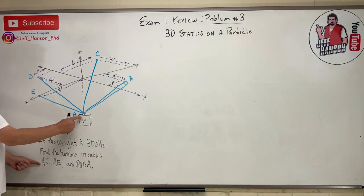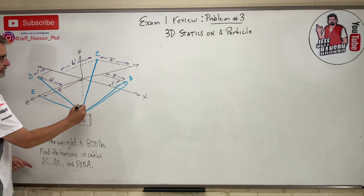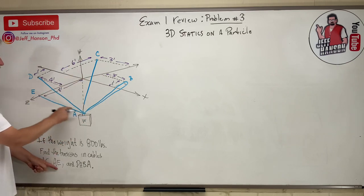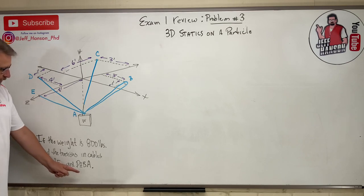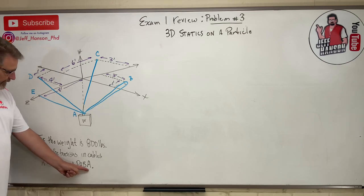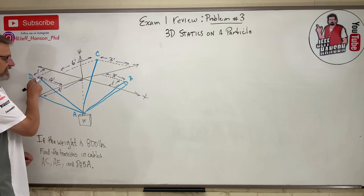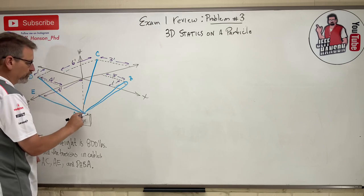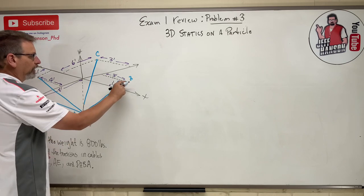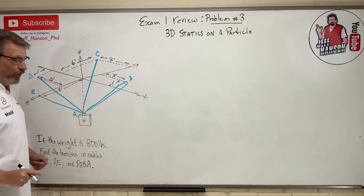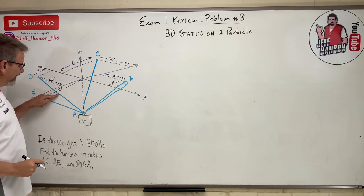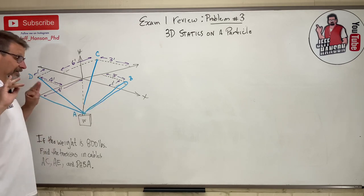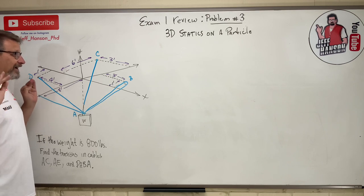So that's cable AE — one cable — and cable DABA, like yabba-dabba-doo, D-A-B-A. It's one cable that comes down here, goes through a ring, goes up around a pulley, and then comes back. The tension at one end is the same as the tension in the middle and at the other end — same tension throughout, no problem.